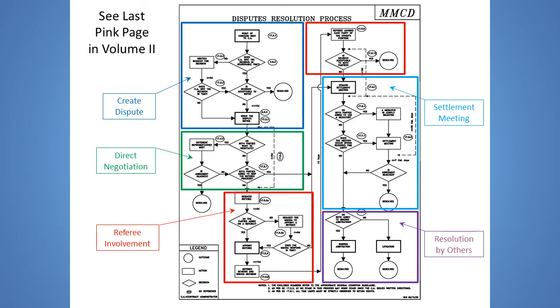To effectively implement these premises, we designed a multi-step process which maximizes the chances that the two parties will come to a resolution before having to get a judge or an arbitrator to impose one. If you have a copy of our Volume 2, look at the last pink page to find this logic flowchart for dispute resolution. To make it simpler to follow, I've boxed the various steps that I will discuss individually. The chart shows where the time deadlines occur and gives the general condition clause number which relates to each step.